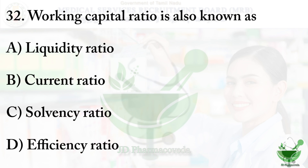Question number 32: Working capital ratio is also known as — option A liquidity ratio, option B current ratio, option C solvency ratio, and option D efficiency ratio. The correct option is option B, current ratio. The working capital ratio is a metric that measures a company's ability to pay its bills and loans over the next 12 months; it's also known as current ratio.